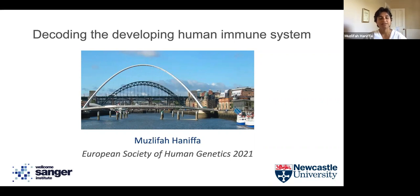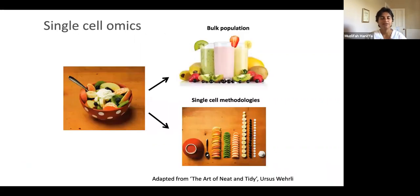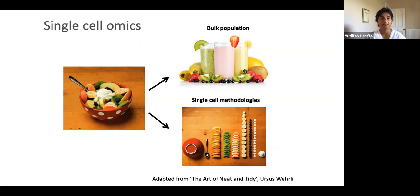I'm going to spend the rest of the 30 minutes talking about decoding the developing human immune system. This is work that has leveraged the enormous progress made within the single cell genomics and omics fields, where if we were to imagine human tissue as a fruit cell in a bowl, what this has enabled us to do is to measure many parameters at individual cell resolution to deconstruct the tissue.